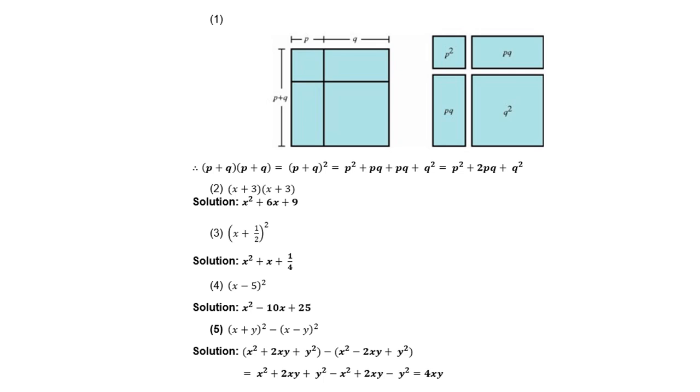If you look at the next one, (x + 3)(x + 3). Of course, you can also apply the shortcut now. You can say x times x is x². Then you can say x times 3 is 3x, and double it to give you 6x. And then 3 times 3 is 9. So with the next one, you can just say x times x is x². Then x times ½ times 2 will give you 1x. And ½ times ½ is ¼.